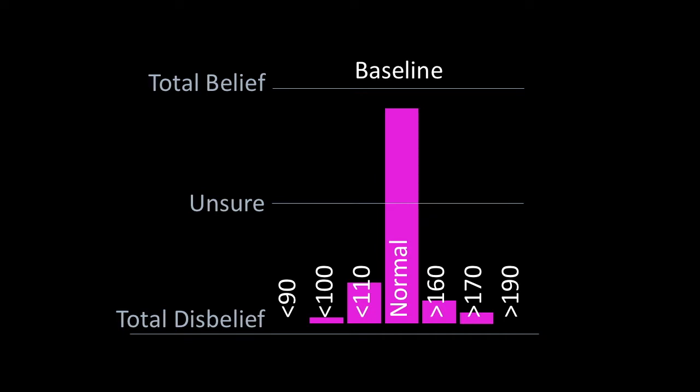If the trace were to change, then belief would be added to a different category and subtracted from the normal classification.